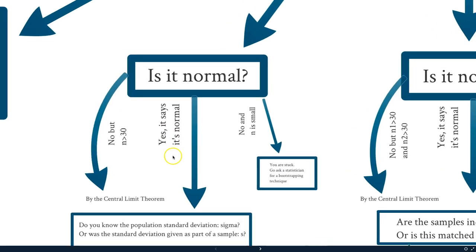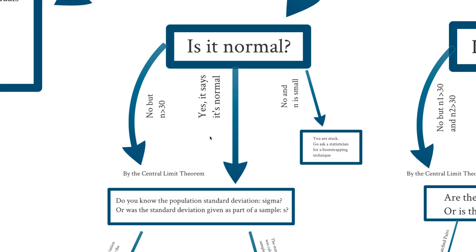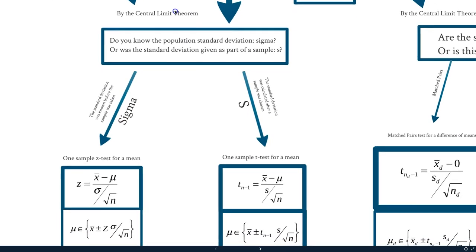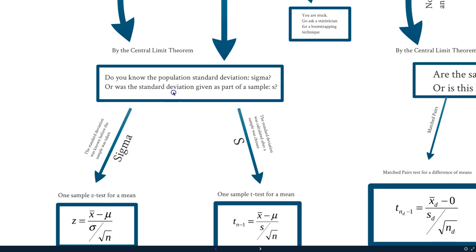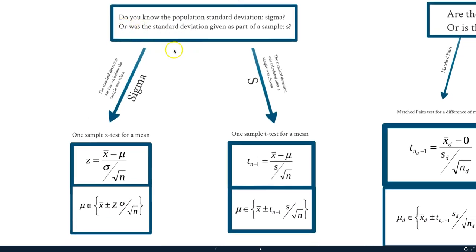We move on down and then we ask our next question: is it normal? Remember, we have to satisfy the demands of the central limit theorem for this testing. So it either has to be yes it is normal, or no but n is greater than or equal to 30. If that is true, then by the central limit theorem we can get down to this next step.